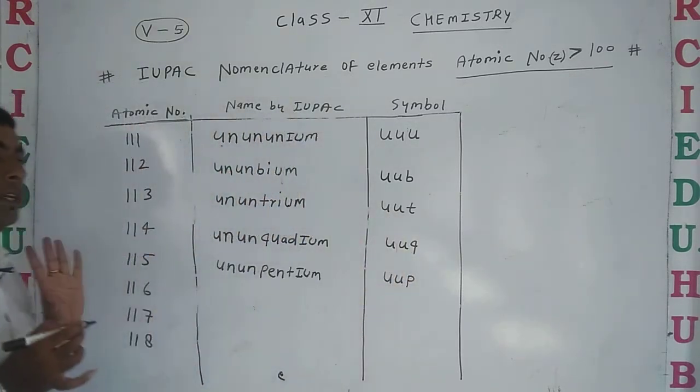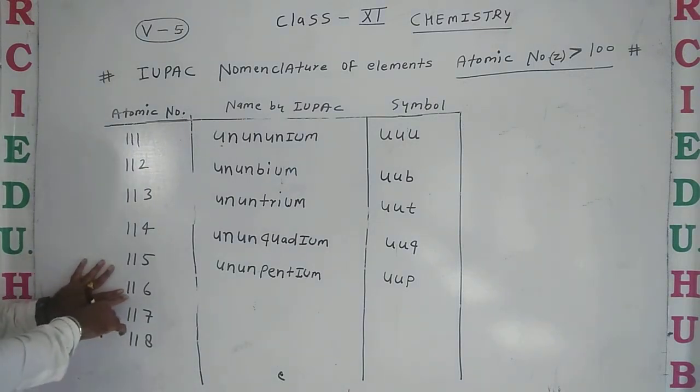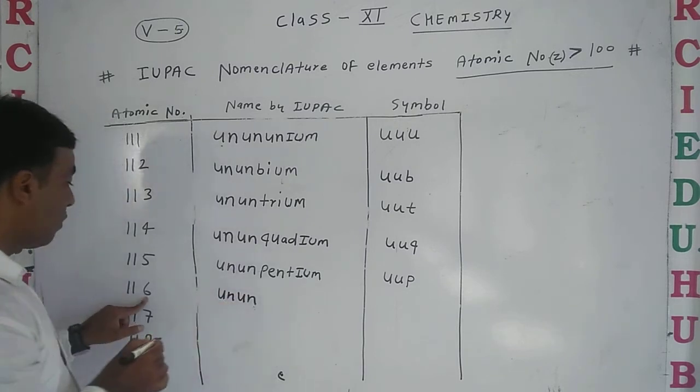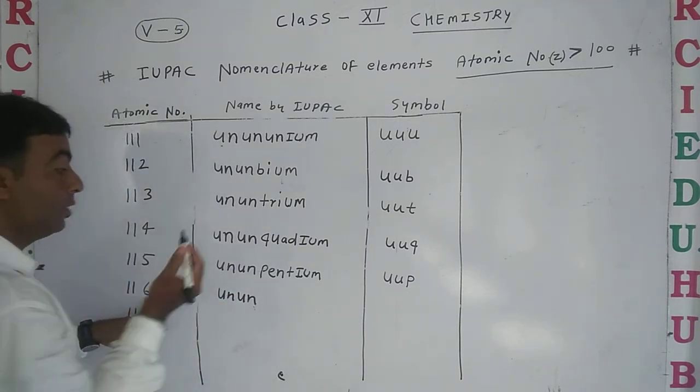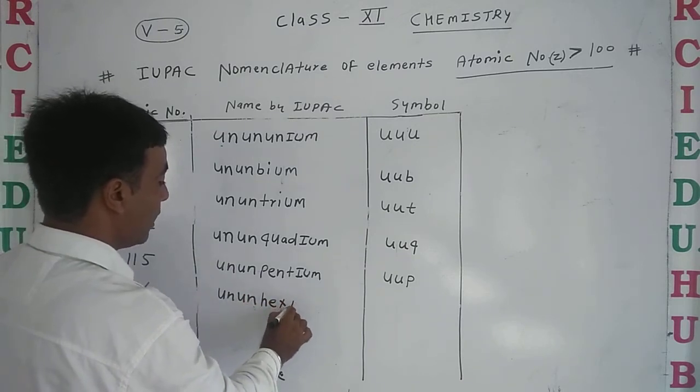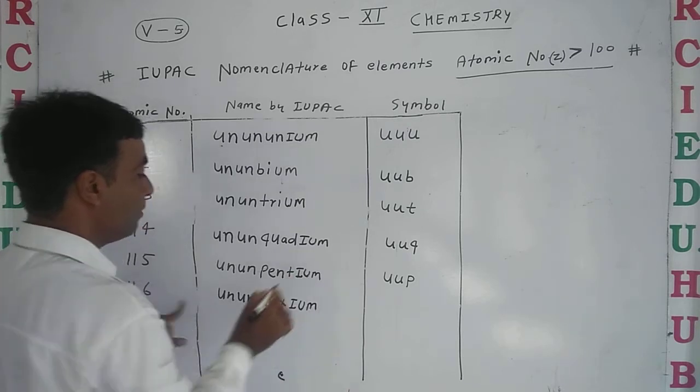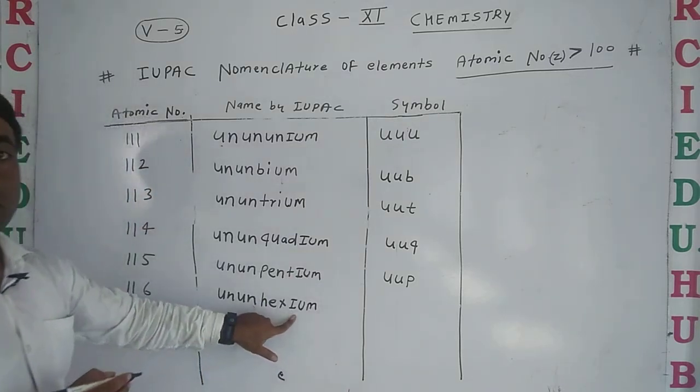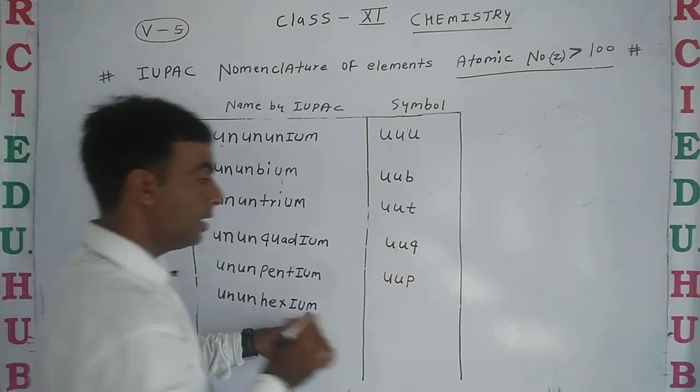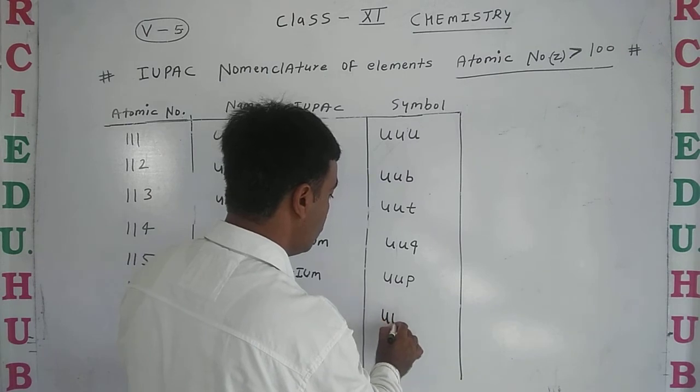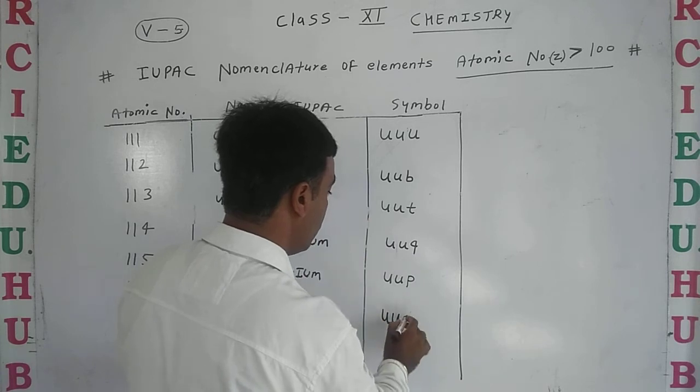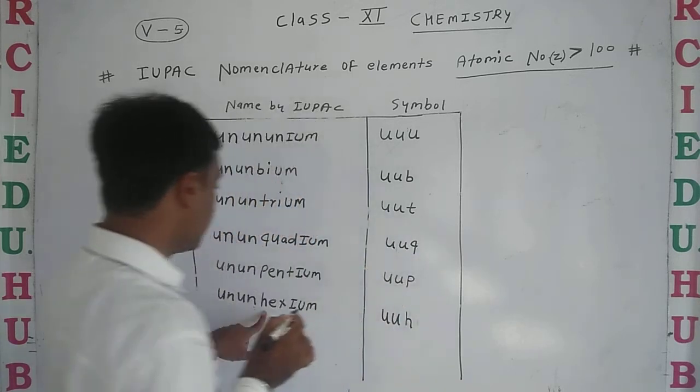Next is 116 - again 'un' and 'un', and for 6 we use 'hex'. So 'hex' with suffix '-ium' becomes ununhexium. The symbol will be U U H - Uuh.